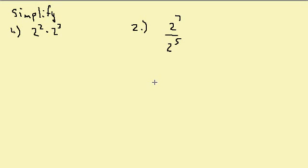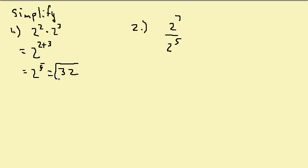Let's look at simplifying expressions with exponents. In the first one we have 2 squared times 2 to the third. Since we're multiplying and the bases are the same, we add the exponents. So this would be 2 raised to the 2 plus 3, which equals 2 to the fifth, which is 32. This is the property: a to the m times a to the n equals a to the m plus n. If the bases are the same, we add the exponents.